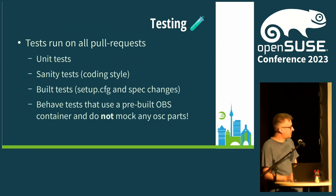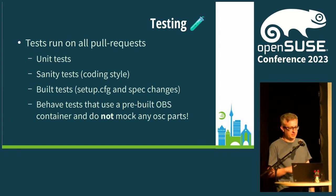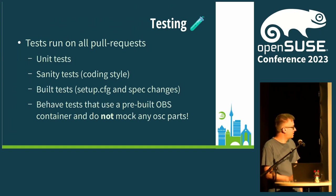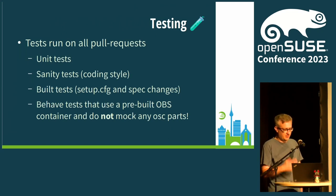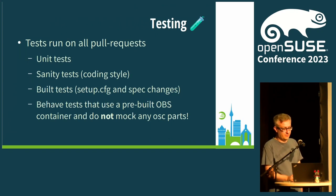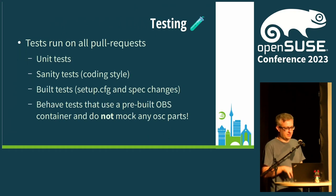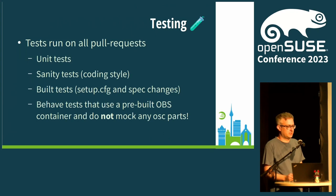There's quite a lot of news about testing. Unit tests were there already, but there are also new sanity tests to check your coding style. We are also building the project using RPM build, pip, and everything else in GitHub Actions so you get immediate feedback on your pull requests. I've also put together behave tests that use a special pre-built OBS container and they test OSC without mocking anything — it just runs OSC from Git and tests how it works in real life. Obviously the test coverage is not that great and we are still working on it.